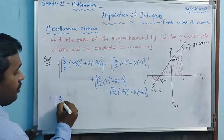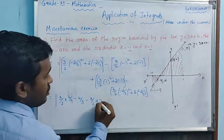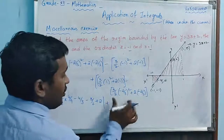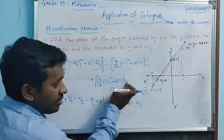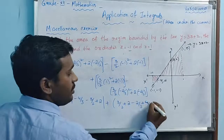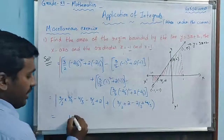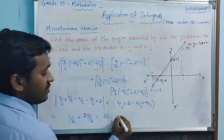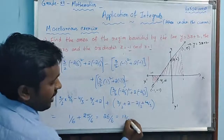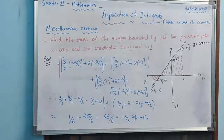Simplifying: 3/2 × 4/9 - 4/3, then minus (-3/2 + 2), gives modulus of the first part, plus 3/2 + 2 - 2/3 + 4/3 for the second part. The first part gives 1/6 and the second gives 25/6, totalling 26/6 = 13/3 square units. This completes the solution.